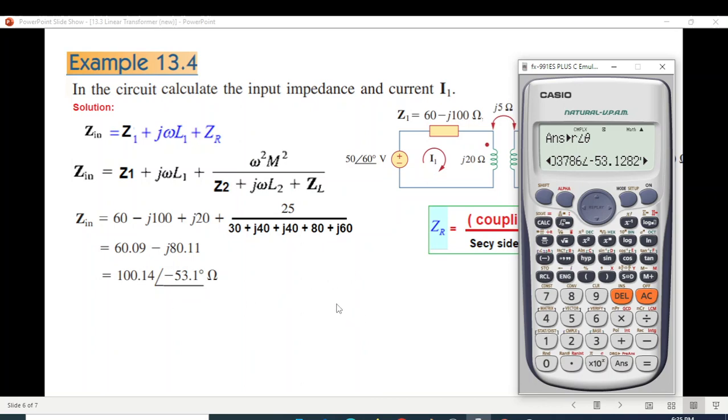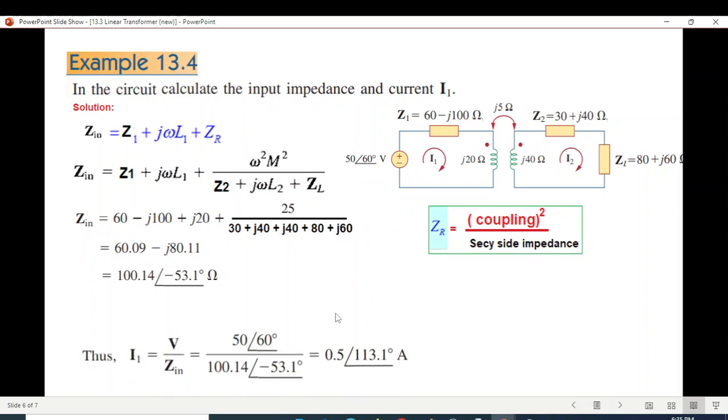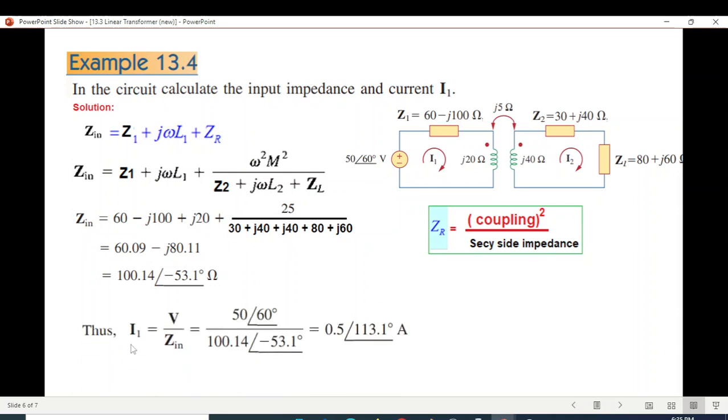Z in is calculated. Now calculate current by V divided by Z in, total impedance. Voltage given is 50 angle 60. Z in is already calculated, so this is the answer for current.